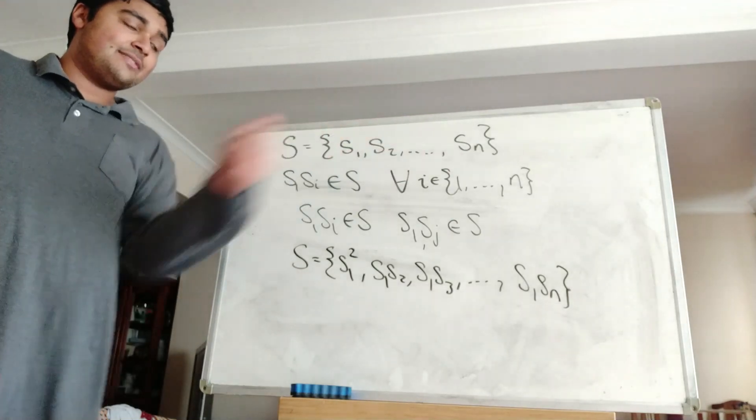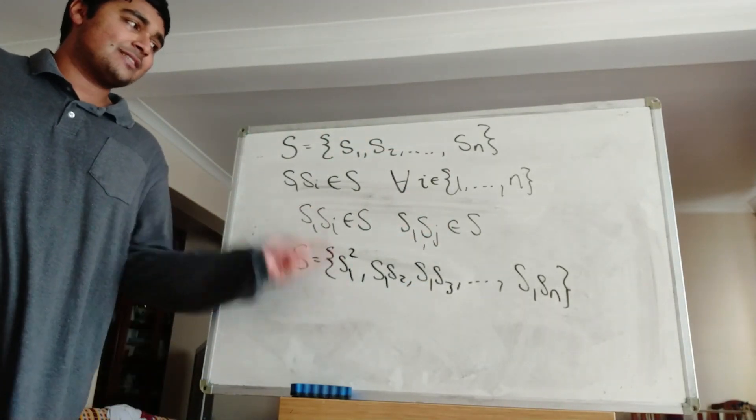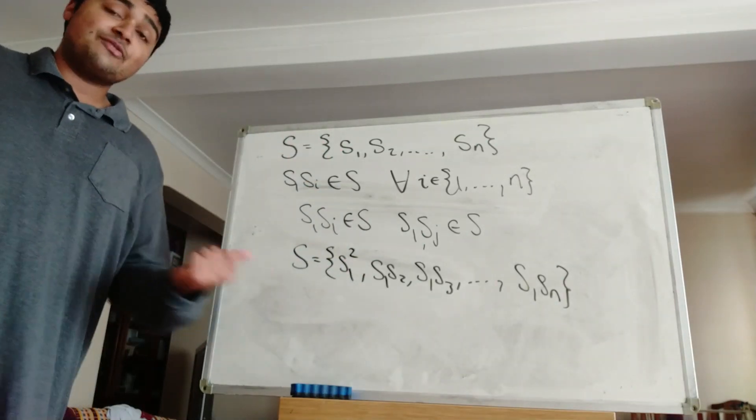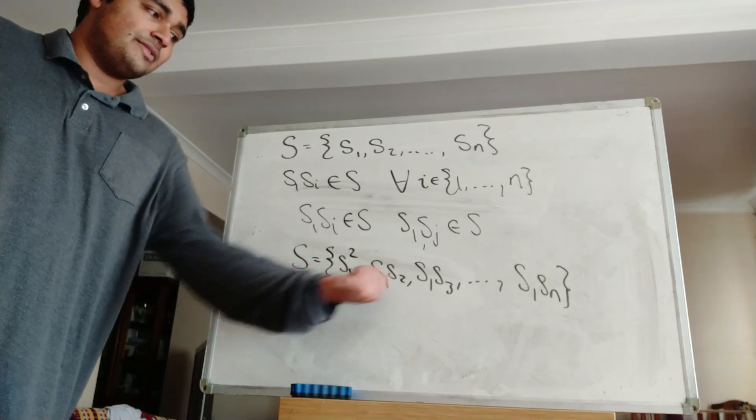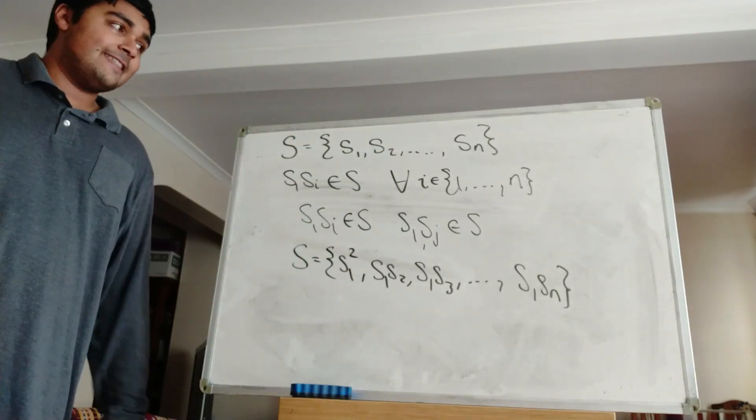Okay, so we have S written in this form here, and S also written in this form here. Now that's not to say that S1 squared is S1 and S1 S2 is the same as S2. Of course that would be true if S1 was 1, but we don't know that. But what we do know is if we take all of these terms here and add them up, we're going to get the same thing as if we add all the terms up in that guy there.